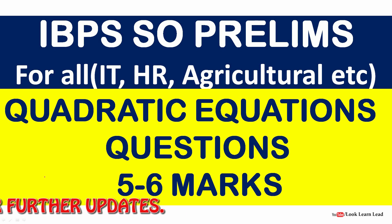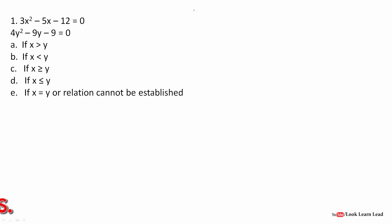The first question is 3x² - 5x - 12 = 0. I will solve this a bit slower so I can explain the method. What I actually do is make two sections — one for x and one for y. To solve for x, I look at the factors: 3 and 12. I break them down — 3 is prime, and 12 = 2 × 2 × 3 = 4 × 3. By rearranging these factors I need to get -5.